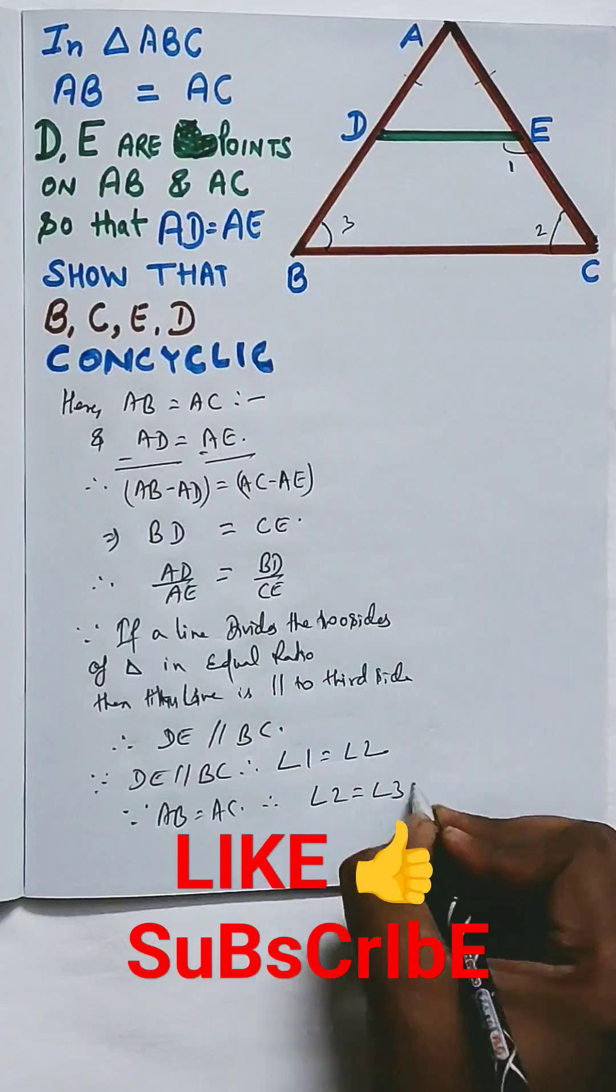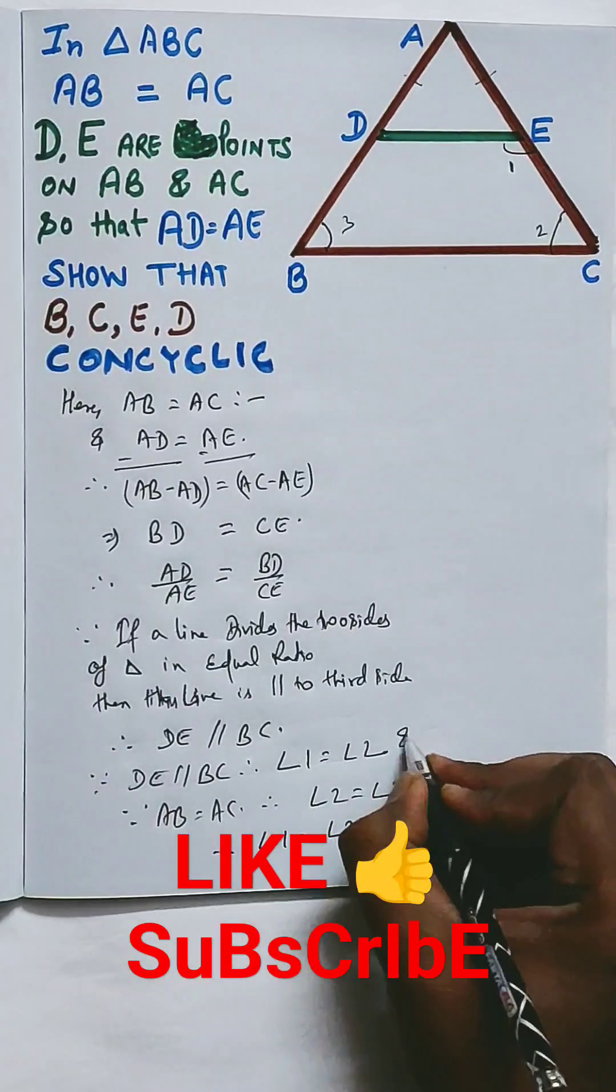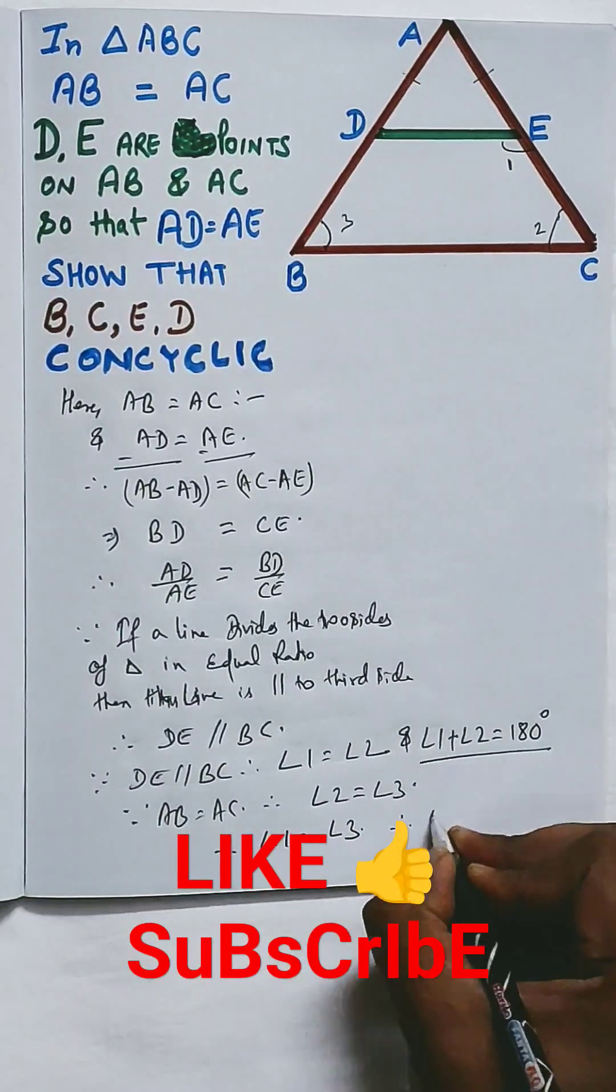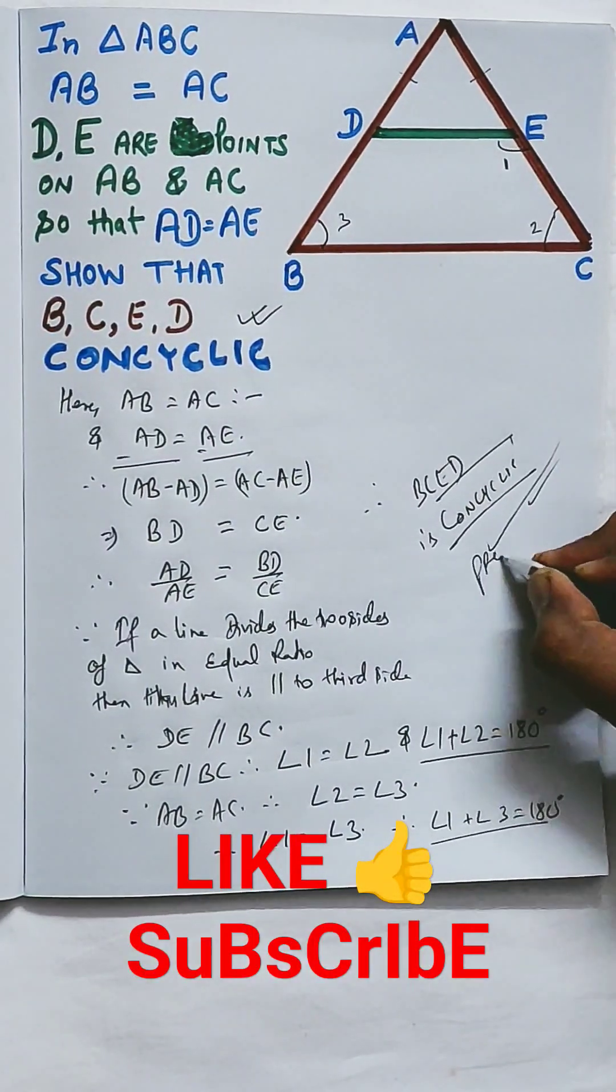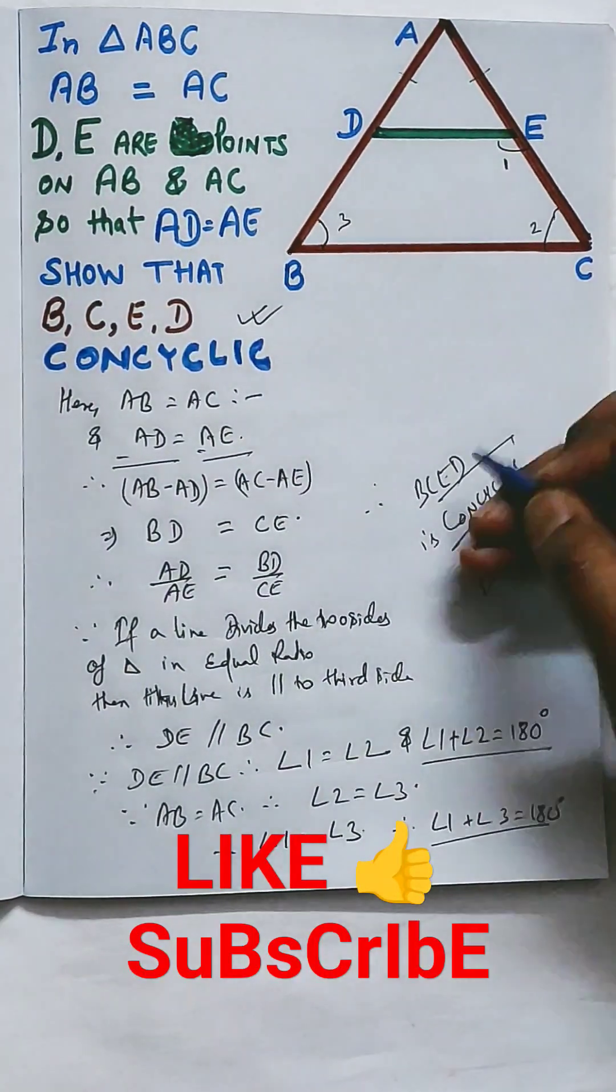So if we say that DE is parallel to BC, then angle 1 equal to angle 2 and sum of angle 1 and 2 is 180 degrees. And since AB equal to AC, angle 2 equal to 3, and angle 1 plus angle 3 equal to 180 degrees.